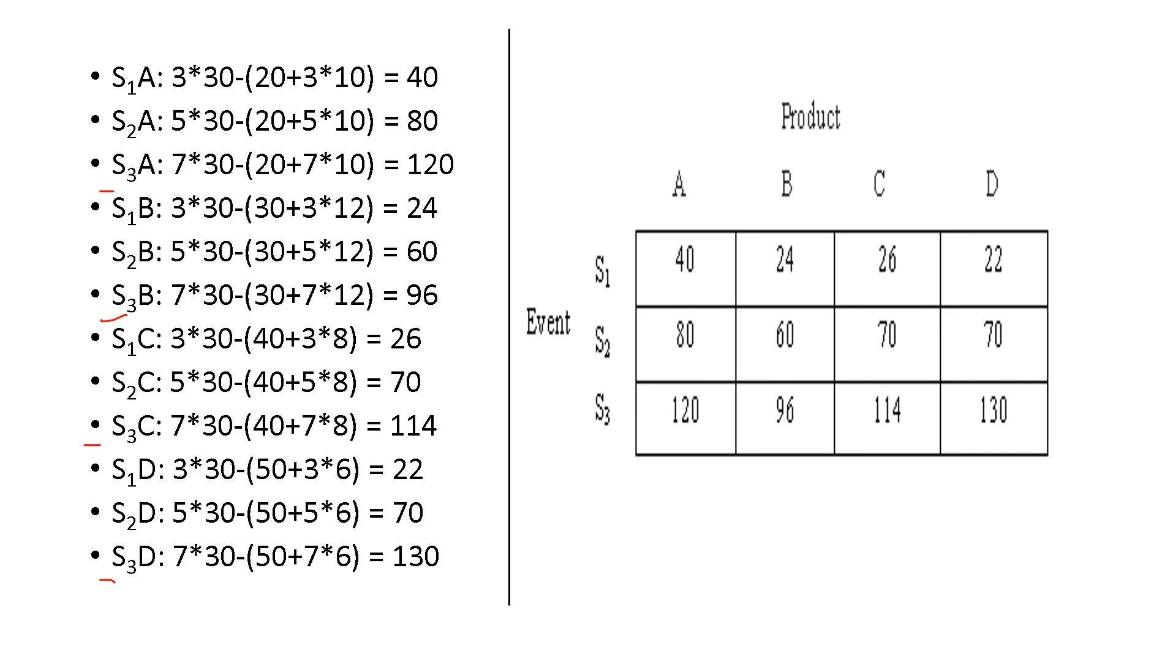Now, just the direct substitution in the payoff table. S1, S2, S3 are the events. A, B, C, D are the products. Direct substitution, S1A, that means the first cell enter the value 40. S2A, that is 80. S3A, that is 120. S1B, that is 24.